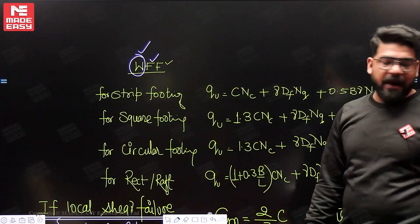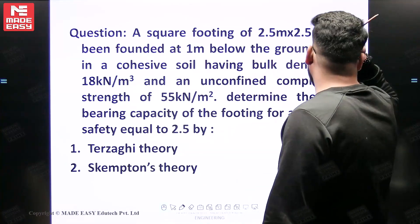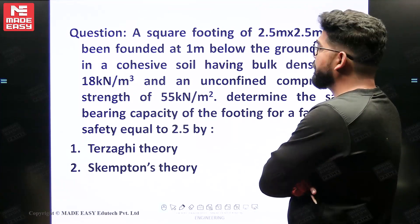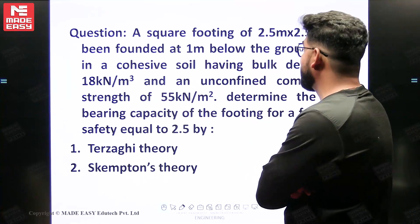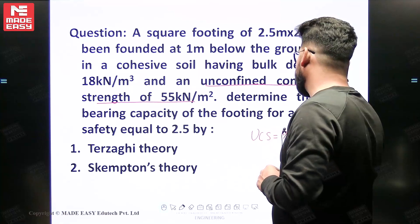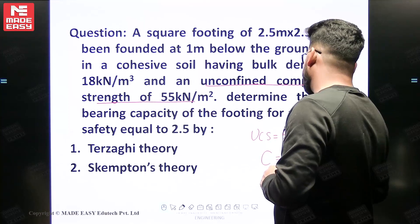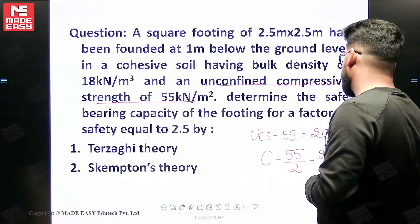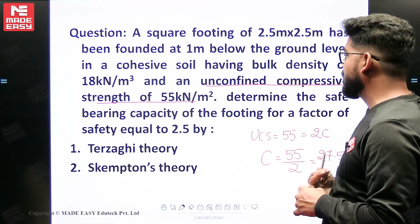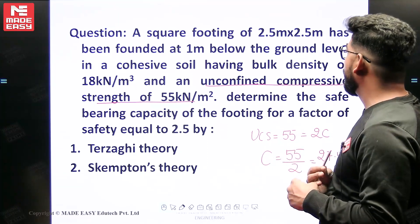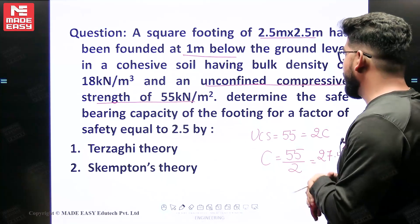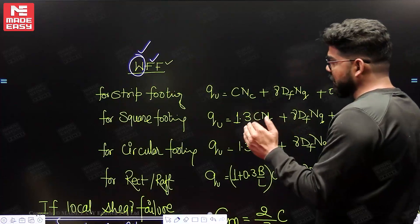Now coming back to the question: a square footing of 2.5 m × 2.5 m has been founded at 1 meter below the ground level in a cohesive soil. The bulk unit weight is 18 kN/m³ and the unconfined compressive strength (UCS) is 55 kPa. Remember: UCS = 2C for clay, so C = 55/2 = 27.5 kPa. We need to determine the safe bearing capacity for a factor of safety of 2.5. Water table is not given, failure type not specified (assume general), footing is square.